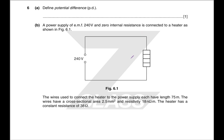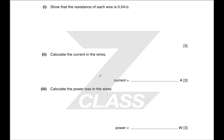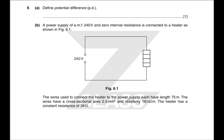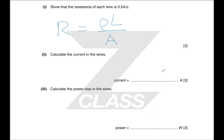Define potential difference — that's just a definition. We have wires connected to a heater and power supply, and the wires are resistive. Show the resistance of each wire — this is just the formula for resistance and resistivity: R equals rho L over A. You have been given the resistivity, the cross-sectional area, and the length, so you get the resistance out.